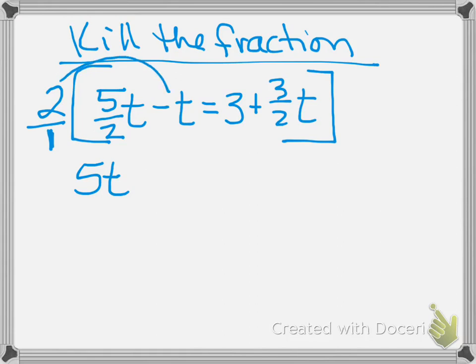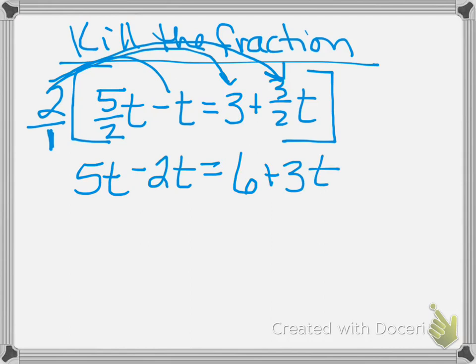I've got to take the two and multiply it by each term. Two times negative T would make that negative two T. Two times the three on the right-hand side would make that six. And two times the three halves T, the twos would cancel out just like it did with the five halves, and it would be plus three T. When you kill the fraction, you multiply by every term all the way across the problem. When you get done with that, there should be no fractions left if you did it correctly.